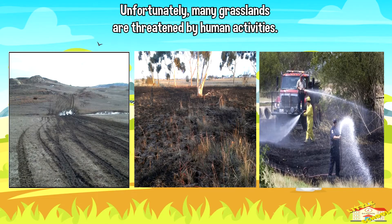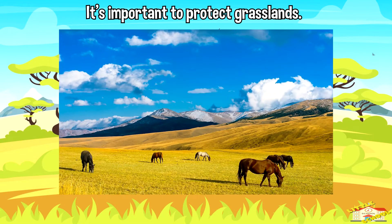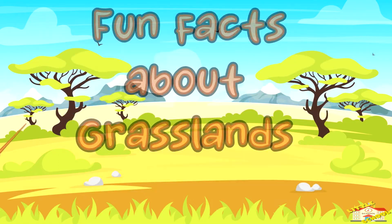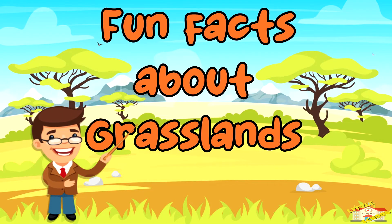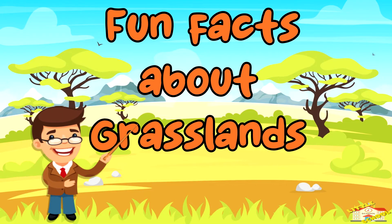Unfortunately, many grasslands are threatened by human activities such as agriculture, development, and overgrazing. It's important to protect grasslands and the species that live there to maintain the health and diversity of these important ecosystems. Now, here are fun facts about grasslands.